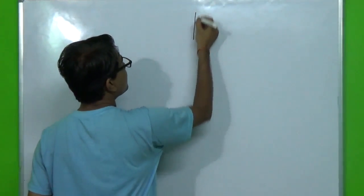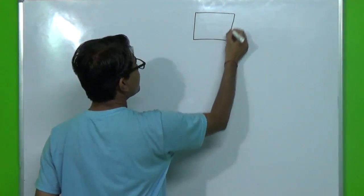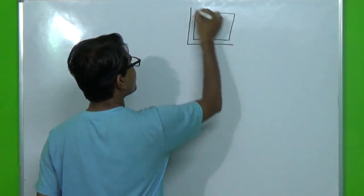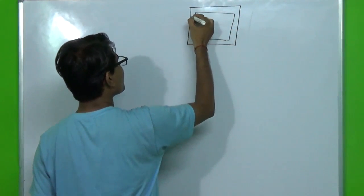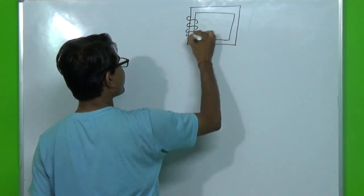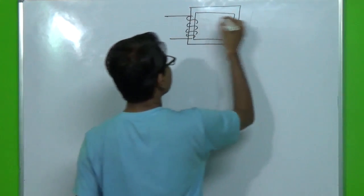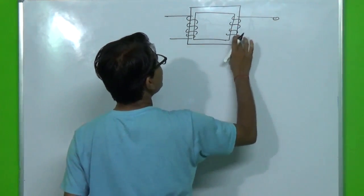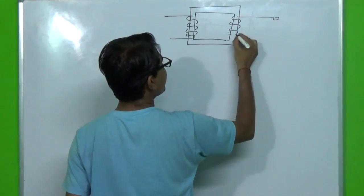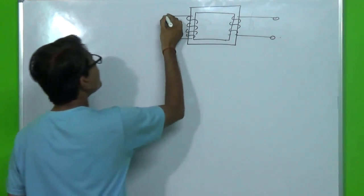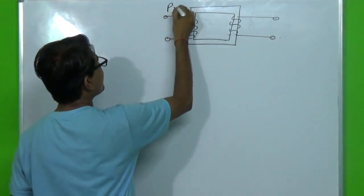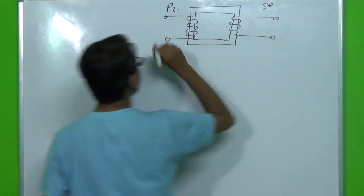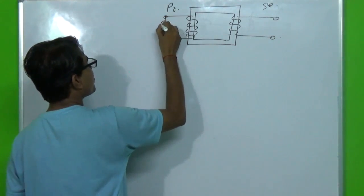We assume some values for the transformer. This is the iron core of our transformer. This is the primary winding and it has another winding which is secondary. Primary winding is connected to a supply source.